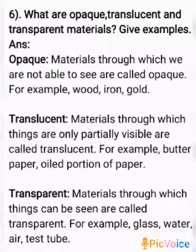We will see them one by one. First, opaque: materials through which we are not able to see are called opaque. For example, wood, iron, and gold.